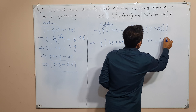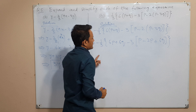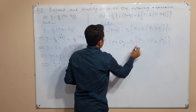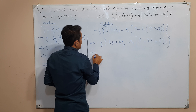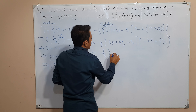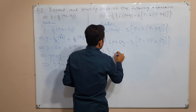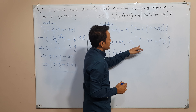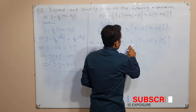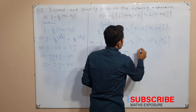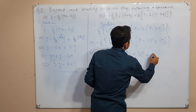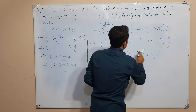अब हम square bracket को solve करेंगे। उससे outer ये है, यानि सबसे inner ये था, उससे outer ये है। तो अब इसको as it is पहले उतारेंगे: minus 1 upon 3, curly bracket, 6p plus 6q। अब minus 3 से हम इन तीनों terms को multiply कर देंगे: minus into plus minus 3 into p equals minus 3p, minus into minus plus 6p, minus into plus minus 18q।